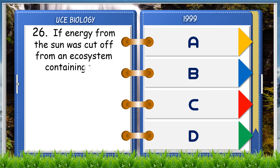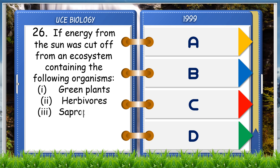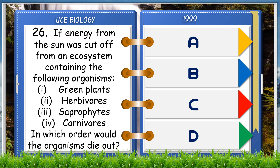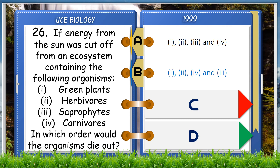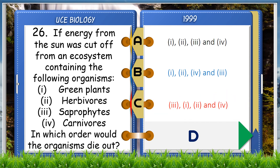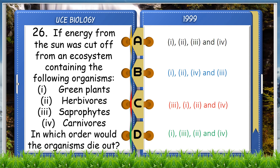If energy from the sun was cut off from an ecosystem containing the following organisms: 1. Green plants, 2. Herbivores, 3. Saprophytes, 4. Carnivores — in which order would the organisms die out? A. 1, 2, 3, and 4, B. 1, 2, 4, and 3, C. 3, 1, 2, and 4, D. 1, 3, 2, and 4. The answer is B, 1, 2, 4, and 3.